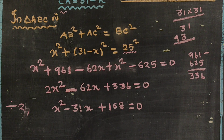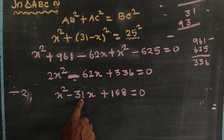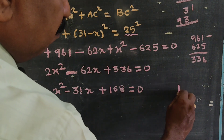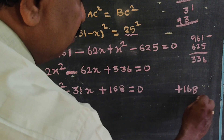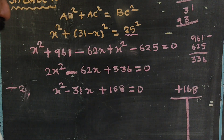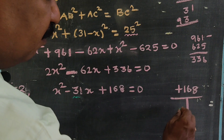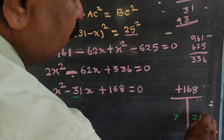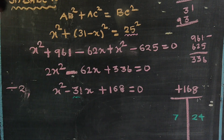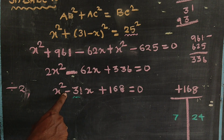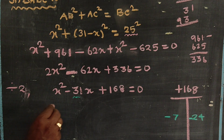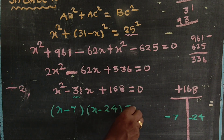Now the product value is 168 and the addition value is 31. The factors are 7 and 24, since 7 times 24 is 168 and 7 plus 24 is 31. So we get x minus 7 into x minus 24 equals 0.